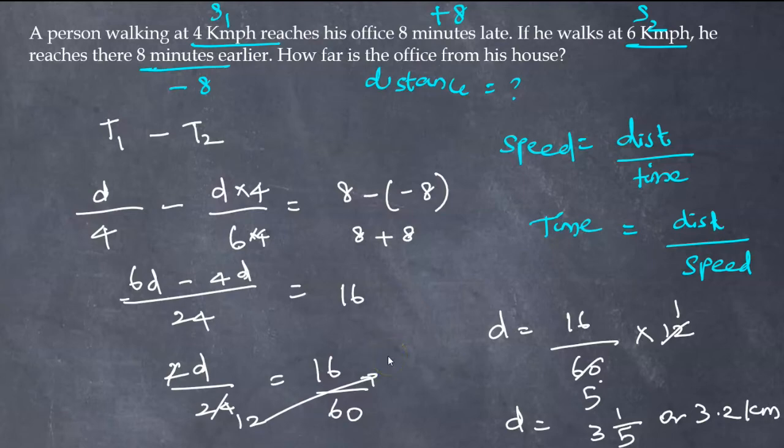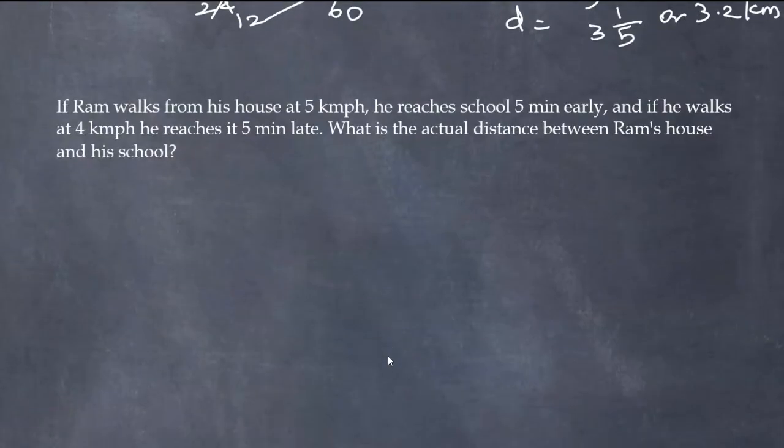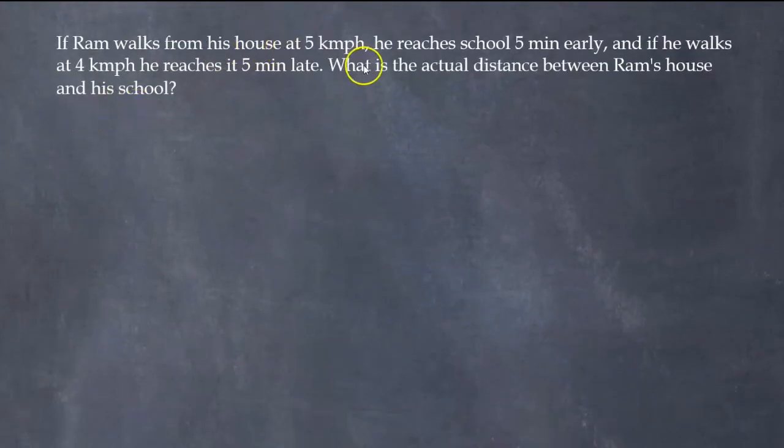Now let's solve another problem of the same type. If Ram walks from his house at 5 kilometer per hour, he reaches school 5 minutes early, and if he walks at 4 kilometer per hour, he reaches 5 minutes late.